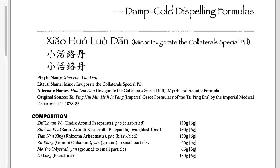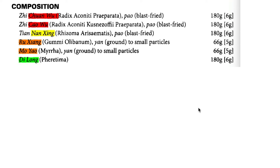Looking at the textbook entry for Xiao Huo Lo Dan, let's highlight the warming herbs in red — Jian Wu and Zhao Wu. Let's highlight the herbs that transform phlegm in yellow — Nan Xing. Let's highlight the herbs that invigorate blood in orange — Ru Xiang and Mo Yao. And let's highlight the remaining herbs in green. With these colors you can see the full composition of Xiao Huo Lo Dan.